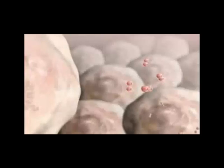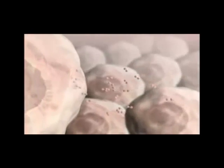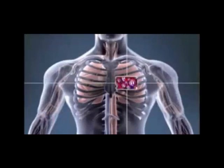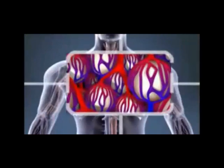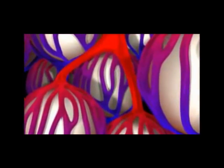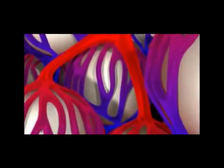Every cell in the body needs oxygen in order to make energy. We breathe in air. Oxygen in the air is carried by the organs of our respiratory tract to the small air sacs in the lung. In the air sac, oxygen is high in concentration and will move into the blood and then carried away by red blood cells.